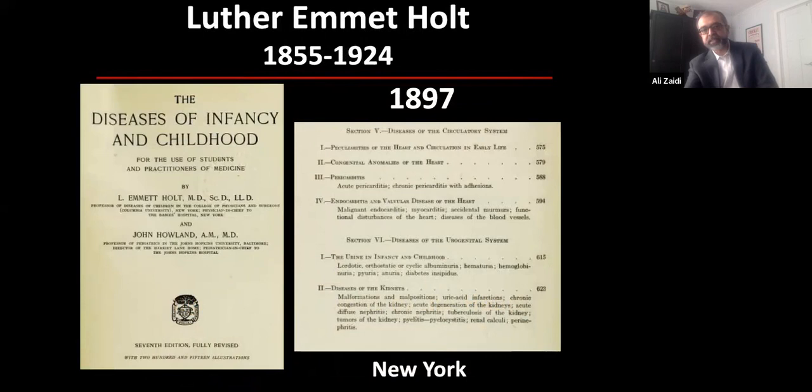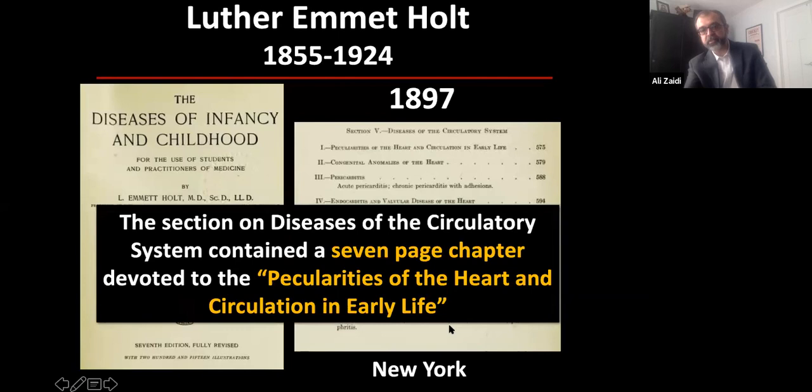One of the main textbooks of pediatrics — not congenital heart disease, but pediatrics — called The Disease of Infancy in Childhood, published in New York in the late 1800s from what is now New York Presbyterian, included a seven-page chapter on the peculiarities of the heart and circulation in early life. People were writing about congenital heart disease in the late 1800s.